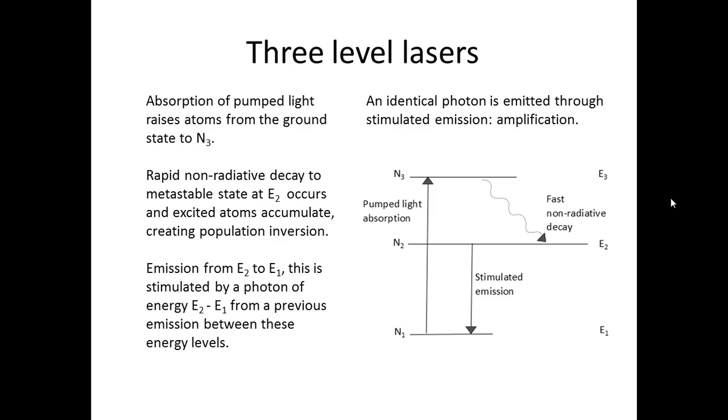So now I'm going to explain how a 3 level laser works, and how they achieve population inversion. So light that is cast upon the atoms in the ground state, which is the E1 state, can send the atoms to the third level, which is the E3 state, if the light has the correct frequency. This process is called pumping.